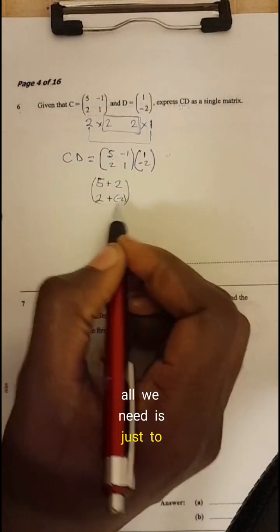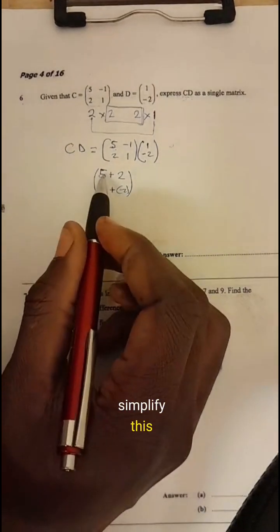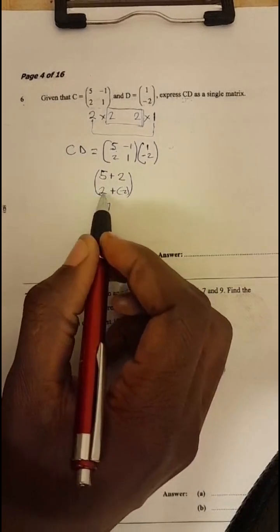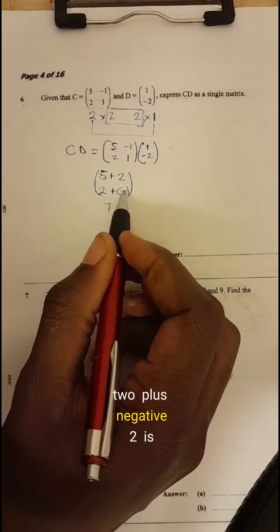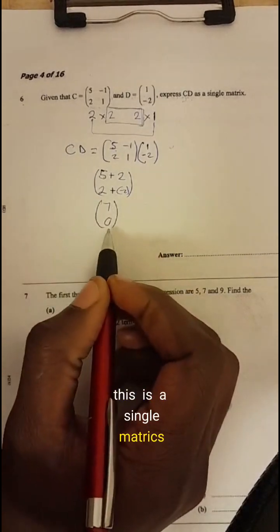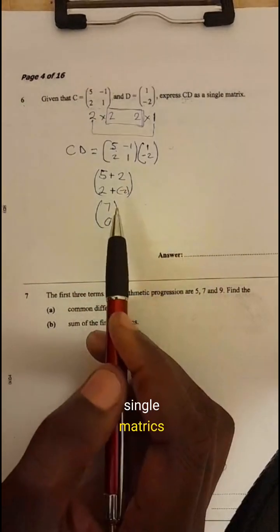So all we need is just to simplify this. So five plus two is seven, two plus negative two is zero. So this is a single matrix that they want. So you've expressed CD as a single matrix.